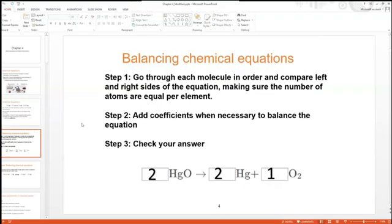So how do you balance the reaction? The way I like to do it is very simple. Step 1: Go through each molecule in order and compare the left and right sides of the equation, making sure the numbers of atoms are equal. Step 2: Add coefficients when necessary to balance the equation. Step 3: Check your answer.